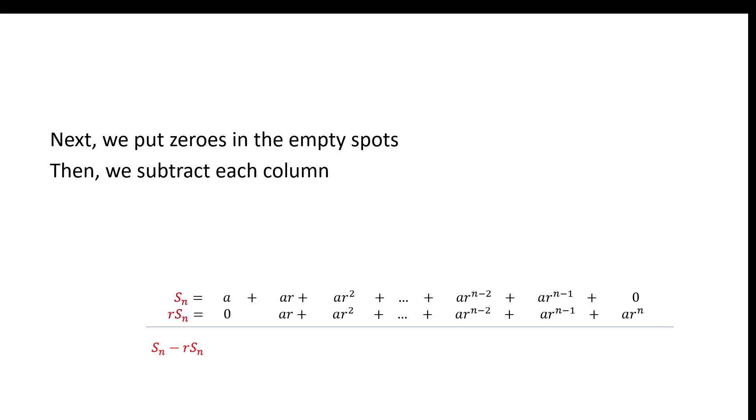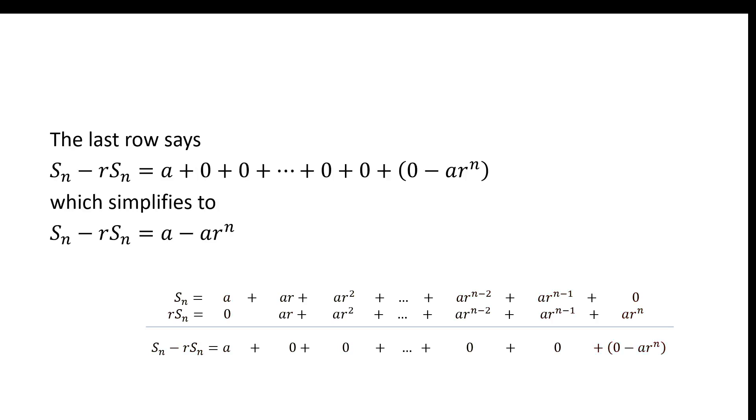We do our subtraction, and every column is a zero except for that last one and the first one. So we end up being able to say that S_N minus R S_N is equal to A minus A R to the N. All these cancel out, and then this becomes minus A R to the N.